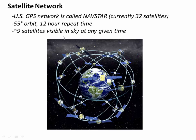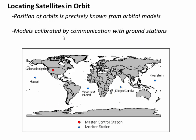Europe maintains a network, Russia maintains a network, and a lot of sophisticated GPS receivers can also use those networks in addition to NAVSTAR. The first step in knowing where you are on the ground is knowing where the satellite is in space — and this is what makes GPS totally unique. The satellite position is known precisely from orbital models, and those models are calibrated by communication with ground stations.